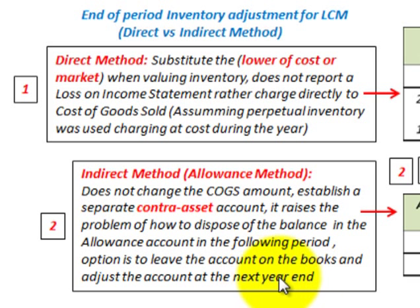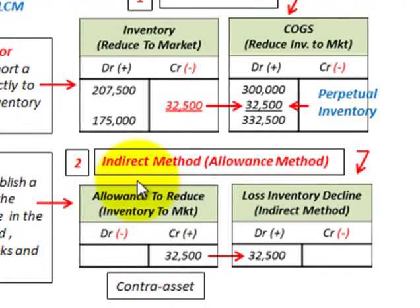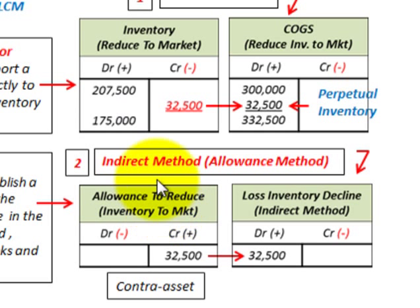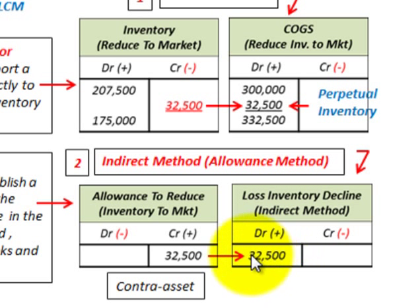The option is usually to leave this account on the books and adjust it at the next year-end whenever you make your end-of-period adjustment. With the indirect method, we set up an allowance to reduce our inventory by $32,500. It's a contra-asset account on our balance sheet, so it effectively reduces our inventory account from $207,500 down to $175,000. The credit of $32,500 goes to our income statement, where we recognize a loss on the inventory decline — so we debit our loss on the income statement by $32,500.